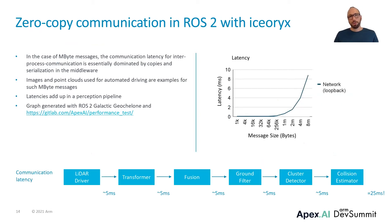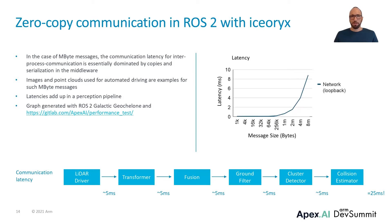With the ROS-compatible reference stack, I will now motivate why zero-copy communication matters and how it works. The following measurements were done with the latest ROS2 Galactic release and the linked open-source performance test tool. The figure on the right-hand side shows the latency for inter-process communication when ROS messages are transferred via the loopback interface. For message sizes over 64 kilobytes, the latency is dominated by copies and serialization in the middleware. When it comes to megabyte messages, the communication latency for a single message is already in the range of several milliseconds. A point cloud is typically between 5 and 10 megabytes and will result in a latency of about 5 milliseconds. In perception pipelines, these latencies add up to critical values.